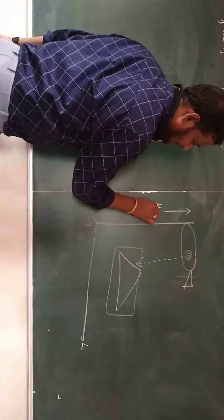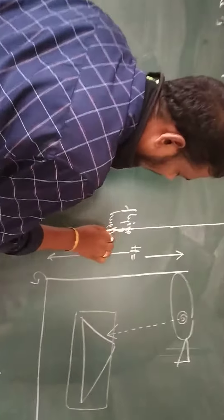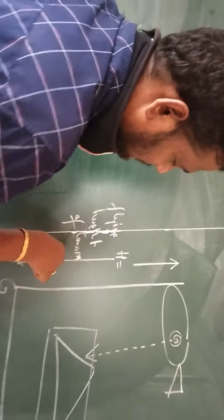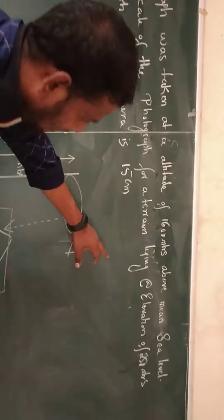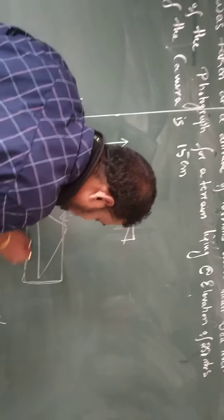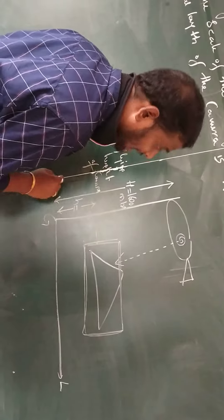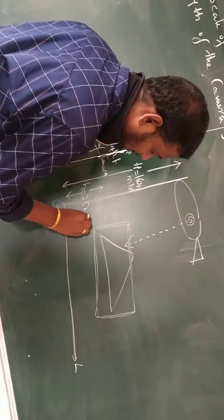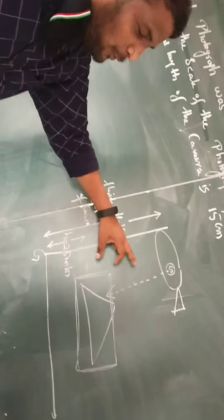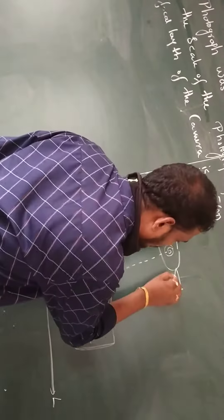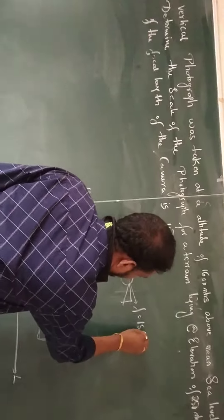The altitude — that is, the total height given in the problem — is nothing but the flying height of the camera, given as 1600 meters. The elevation means the elevation of the terrain, which is 250 meters. We need to calculate or determine the scale of this photograph by aerial photogrammetry survey, and the focal length of the camera, represented by small f, is given as 15 cm.